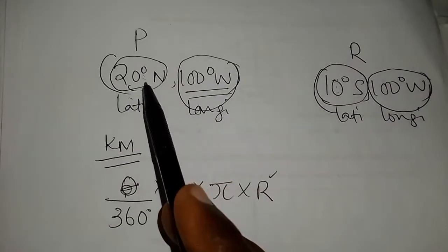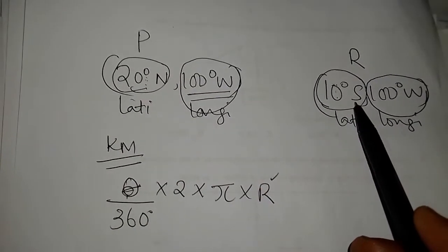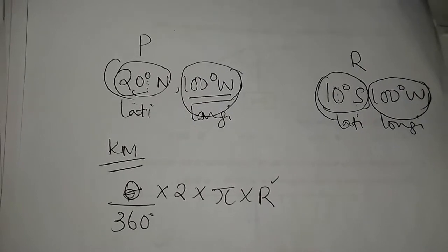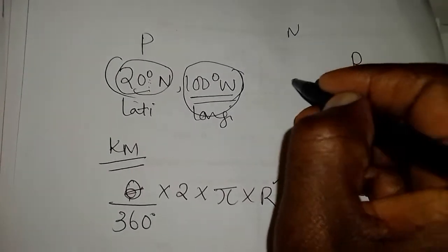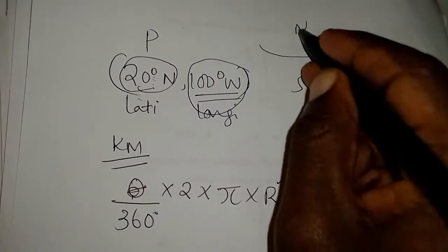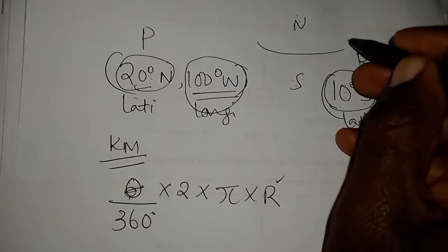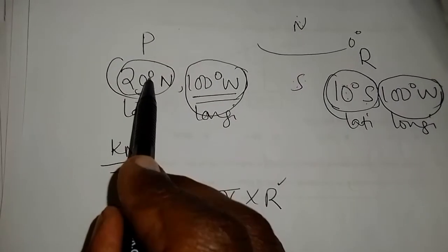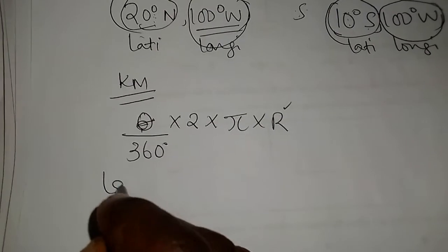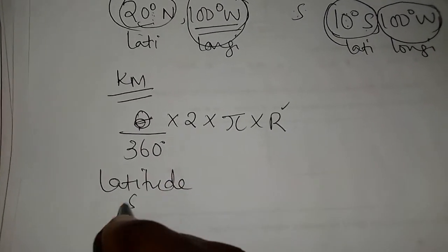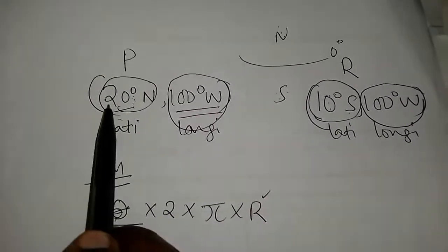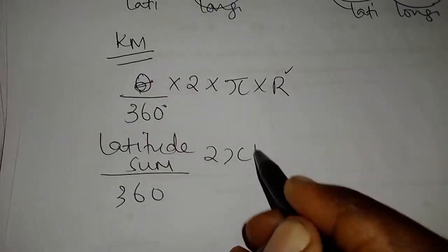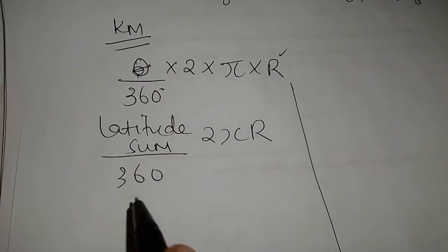So in this case, they are in different hemispheres. North, then south. That means one is at the top part of the globe, then the other is at the bottom part of the globe. North at the top, south at the bottom. The equator is in between the two of them. So in different hemispheres, this is the equator. So I'll come here and say my theta is obtained by saying latitude sum. Latitude sum, why? Because they are in different hemispheres. Addition gets done. So latitude sum divided by 360, 2 pi r.